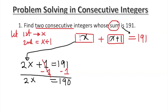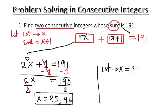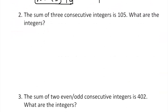Equal to 190. We divide by 2 on both sides and x equals 95. They said find two, so the next one should be 96. The first one is x equals 95, and the second one is x plus 1, which is 95 plus 1 equals 96. Those are your consecutive numbers, one after another.